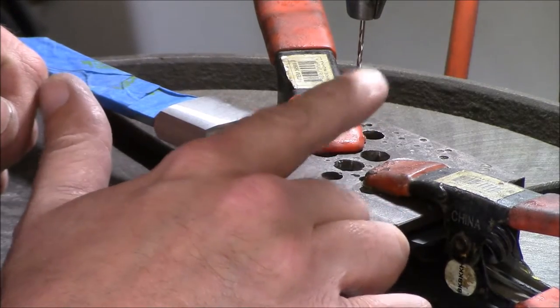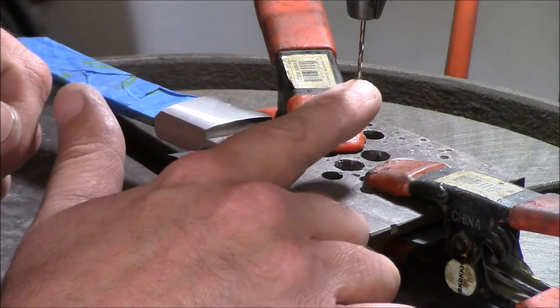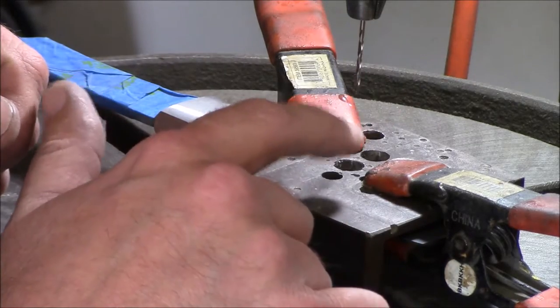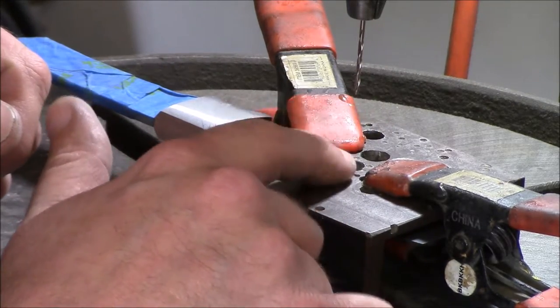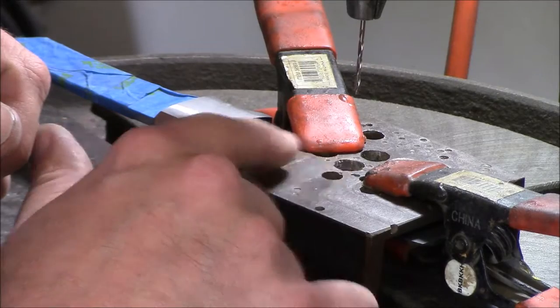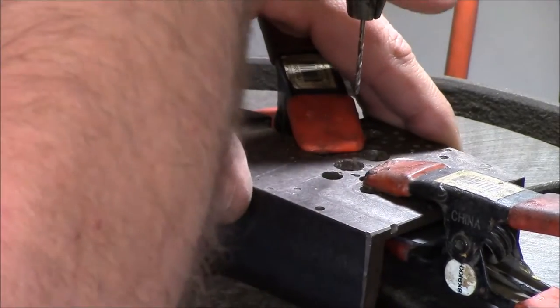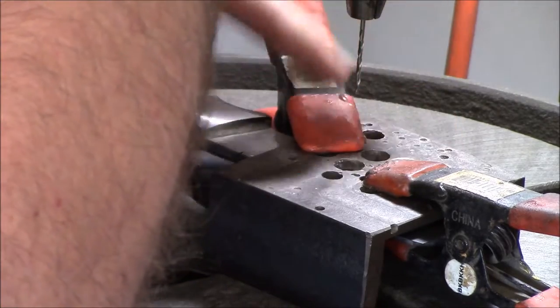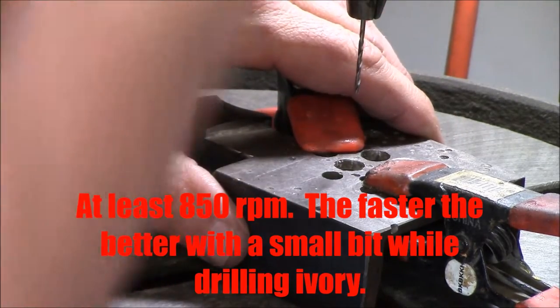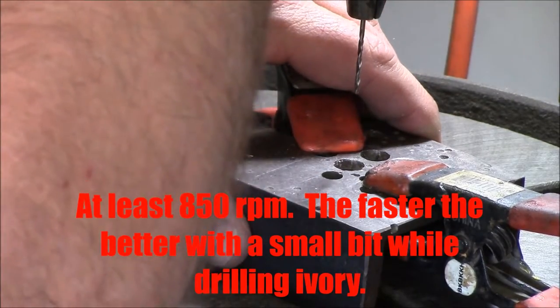That mammoth ivory gets kind of tarry and nasty and sticky whenever you're drilling it. You don't want that to get clogged up because it's going to cause a blowout on the other side that might crack your ivory or knock a big chunk out of the back. So we're just going to take it easy, have it on fast, but I'm not going to force it down really hard.